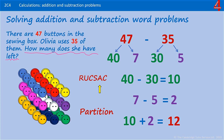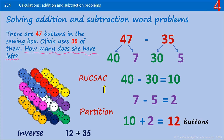Just check we have answered the question — yes, she has 12 buttons left. And to check this, we can use the inverse operation. We have 12 buttons left. Add that to the 35 we took away, and we get 47, which is what we started with.